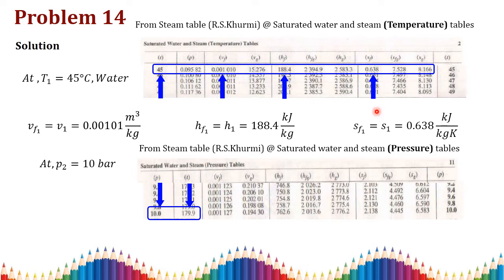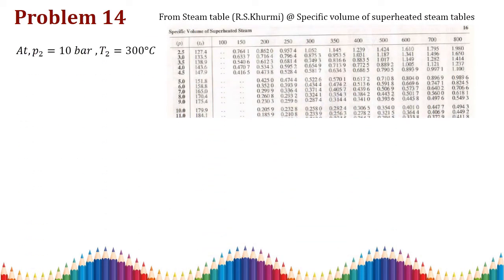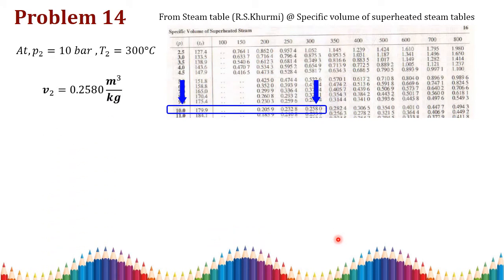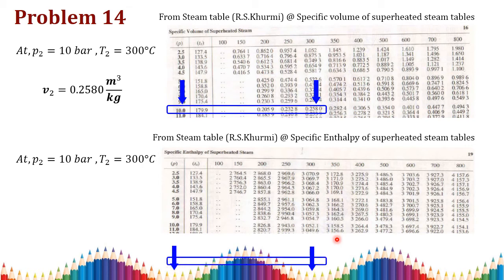At p2 equals 10 bar, the saturation temperature is 179.9°C. Since the given temperature of 300°C is greater than 179.9°C, the steam is confirmed superheated. From the superheated steam table at 10 bar and 300°C, the specific volume v2 equals 0.2580 m³/kg.